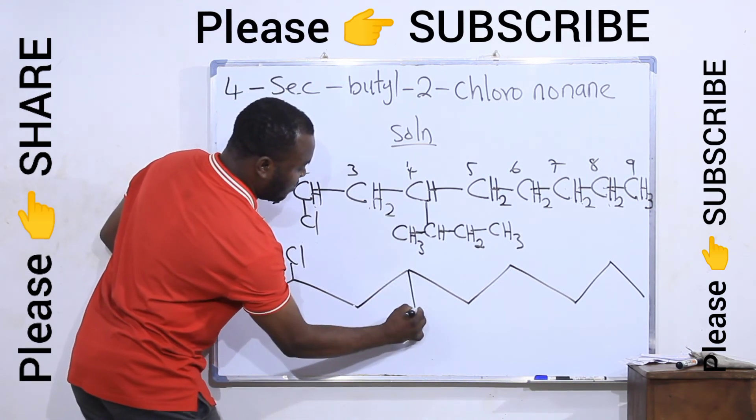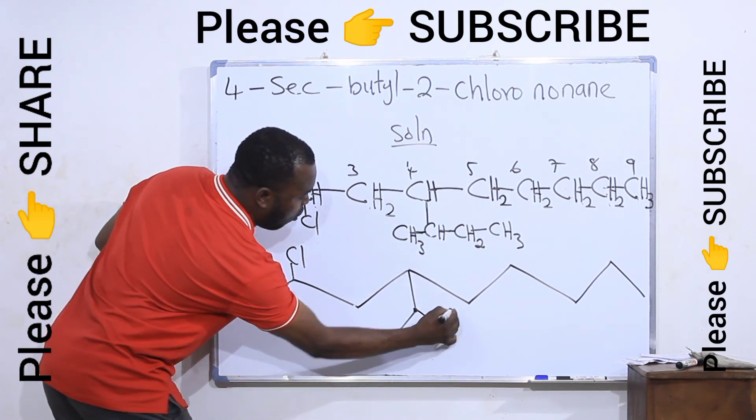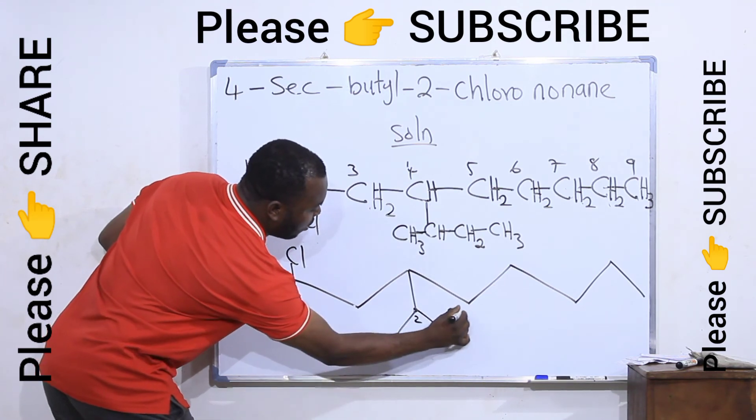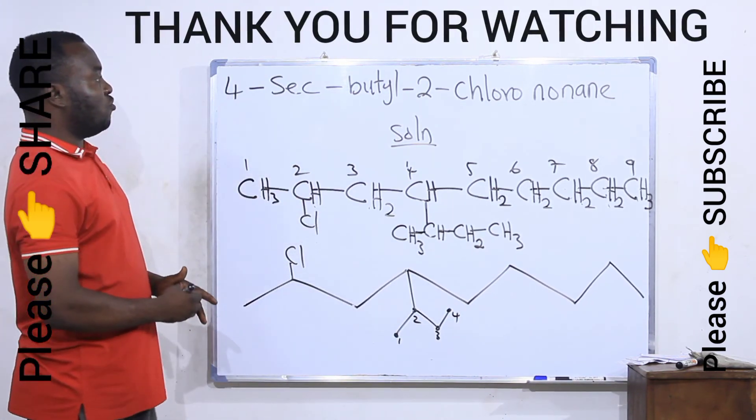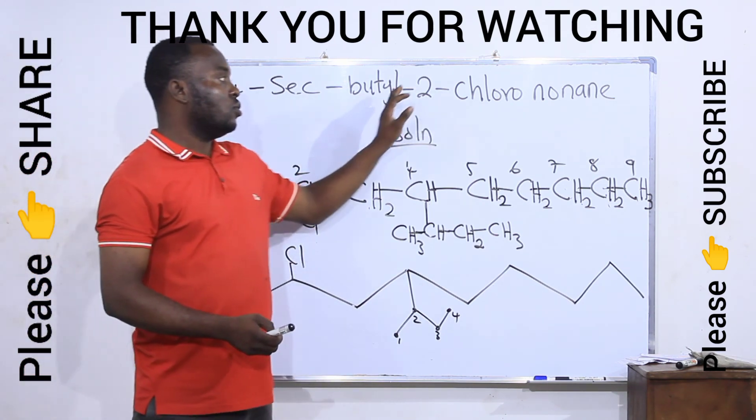Which is like this. Ensure that it is one, two, three, four. The second carbon is the one connected to the chain. Actually, this name is supposed to be 2-chloro-4-sec-butyl-nonane.